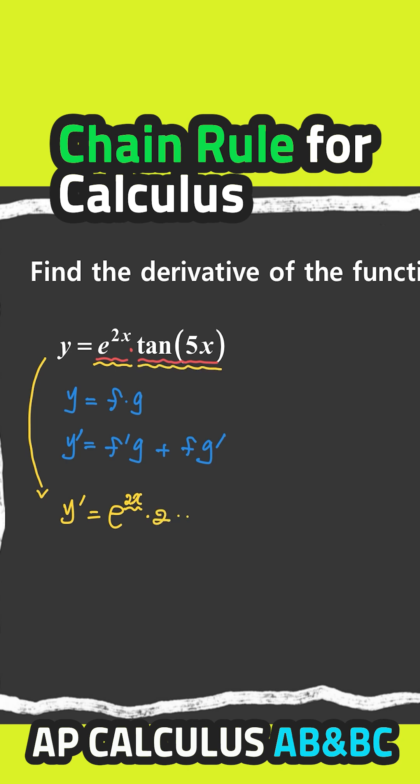And leave this function alone, tangent 5x, plus leave the first function alone, e to the 2x, times the derivative of tangent 5x.